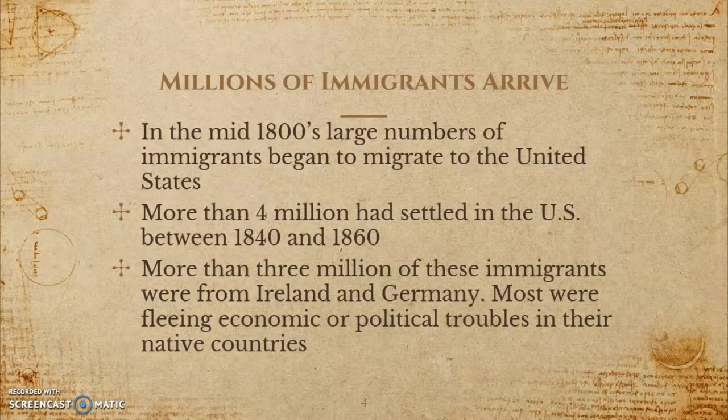In the mid-1800s, a large number of immigrants crossed the Atlantic Ocean to begin new lives in the United States. More than four million settled in the US between 1840 and 1860, and most of them were from Europe. More than three million of these immigrants came from either Ireland or Germany, as a result of either economic or political troubles in their native countries.